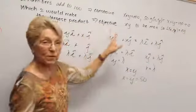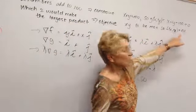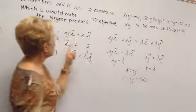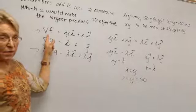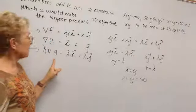Our objective function is to make the largest product. So our f function is just going to be x times y. And we're going to take the gradient of f, the gradient of g, and then lambda times the gradient of g.